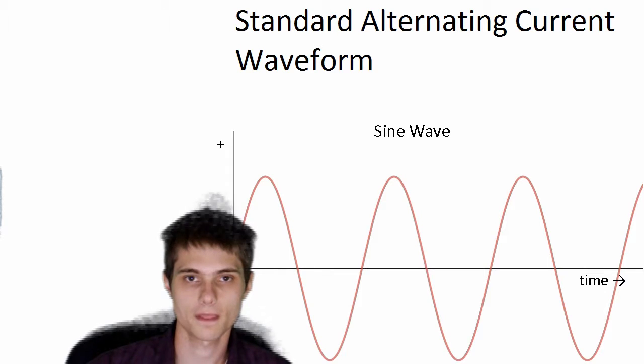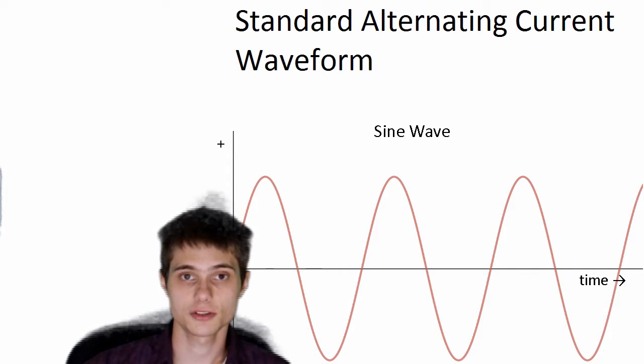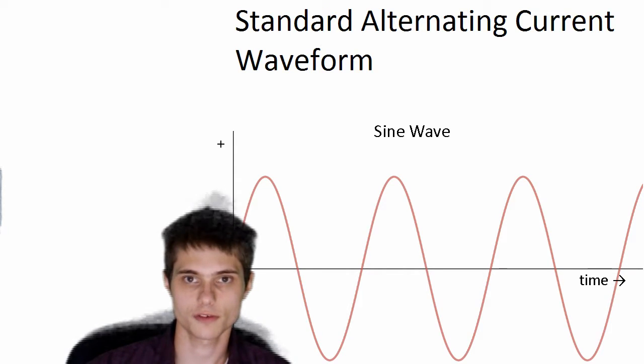Starts out at zero volts, slowly rises up to a peak, and then falls back down again. It goes to zero volts again. Then it changes the polarity, goes the other way, rises up, falls back down again, and then goes back to zero volts.